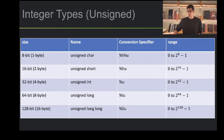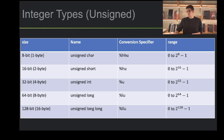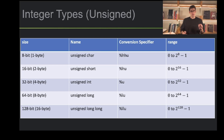Then we have the unsigned integer types, which are nearly identical to the signed integers. The sizes are the same. The names are identical, except for the fact they have the unsigned keyword. The conversion specifiers look really similar, except they use a U instead of a D. And lastly, the ranges start from zero, and the exponents don't have that minus one — because now that we don't have a sign, all values must be positive or zero, so we don't have to dedicate a bit for the sign. We can use that bit to actually contribute to the magnitude of the value.